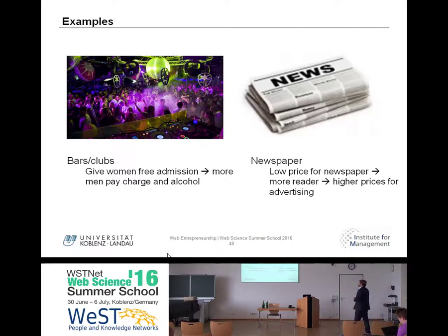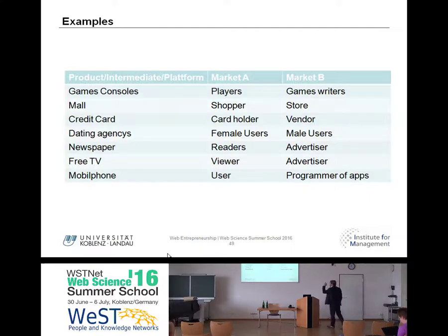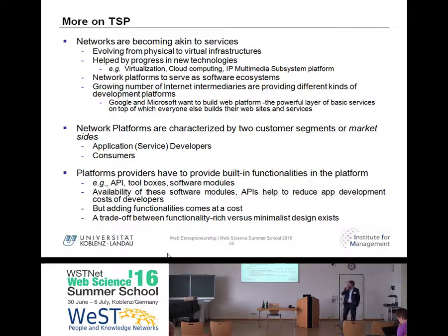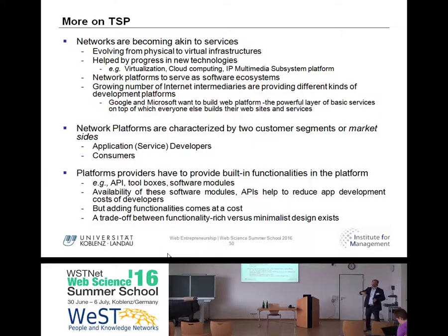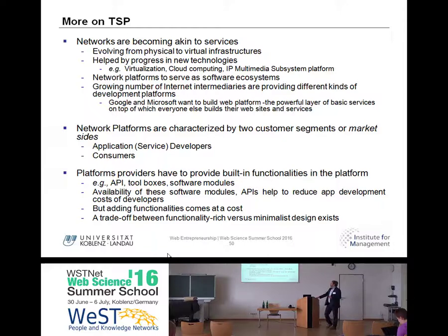Low price for the newspaper means more readers, and then you can have higher prices for advertising. This worked quite well until the web started to grow, and those traditional media companies are now in trouble. Some more examples: credit cards, dating agencies, free TV. I will end my talk with some things I won't go too much into detail on — I just want to show you that it's possible to model those things to find better prices.